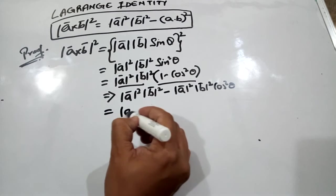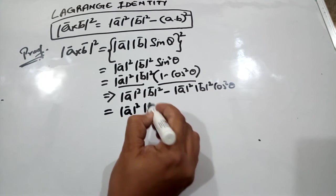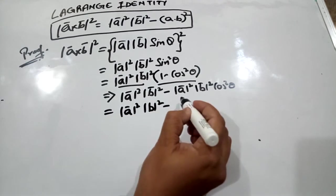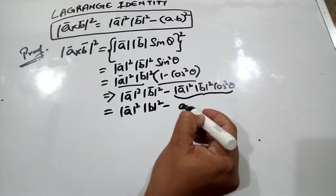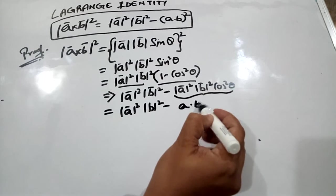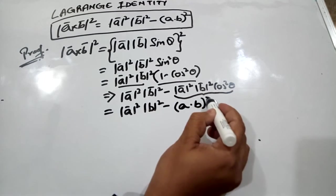So we can write it as mod of a square mod of b square minus, to this we can write it as a dot b whole square.